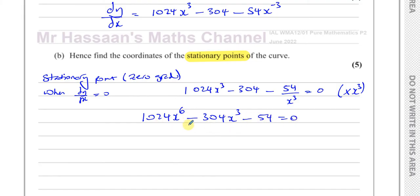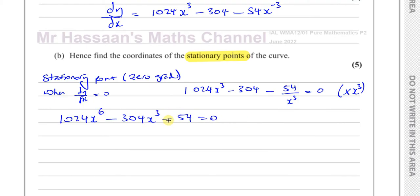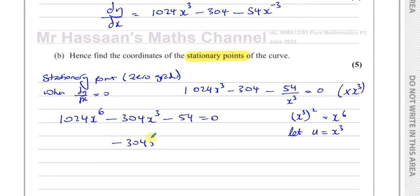This is actually what's called a disguised quadratic. If I let u equal x cubed, then u squared equals x to the power of 6. So the equation becomes 1024u squared minus 304u minus 54 equals 0. If one term is the square of the other in terms of the variable, you have a disguised quadratic, and you can treat it like a normal quadratic equation.